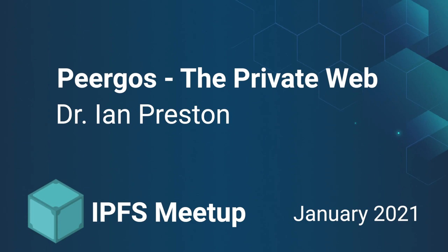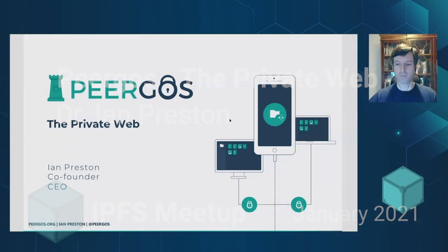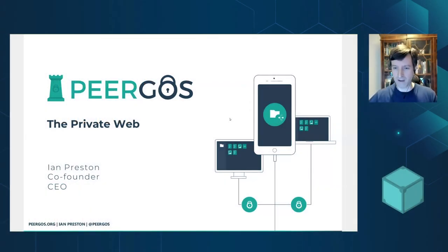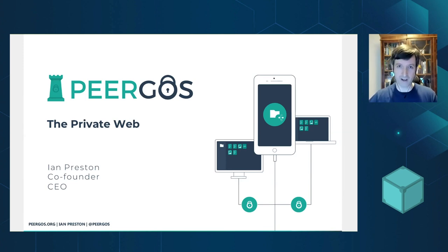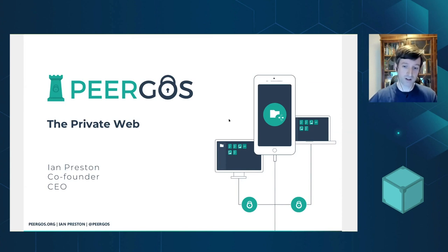I'd like to start by sharing our vision for the private web. Imagine a web where you don't have to log in separately to every different site and where you own your identity. Imagine a web that's not constantly surveilling your every action and using it against you. Imagine owning the data that you create in apps and being able to use it securely in other apps. This is the vision of the private web that we're trying to build with Pyrgos.